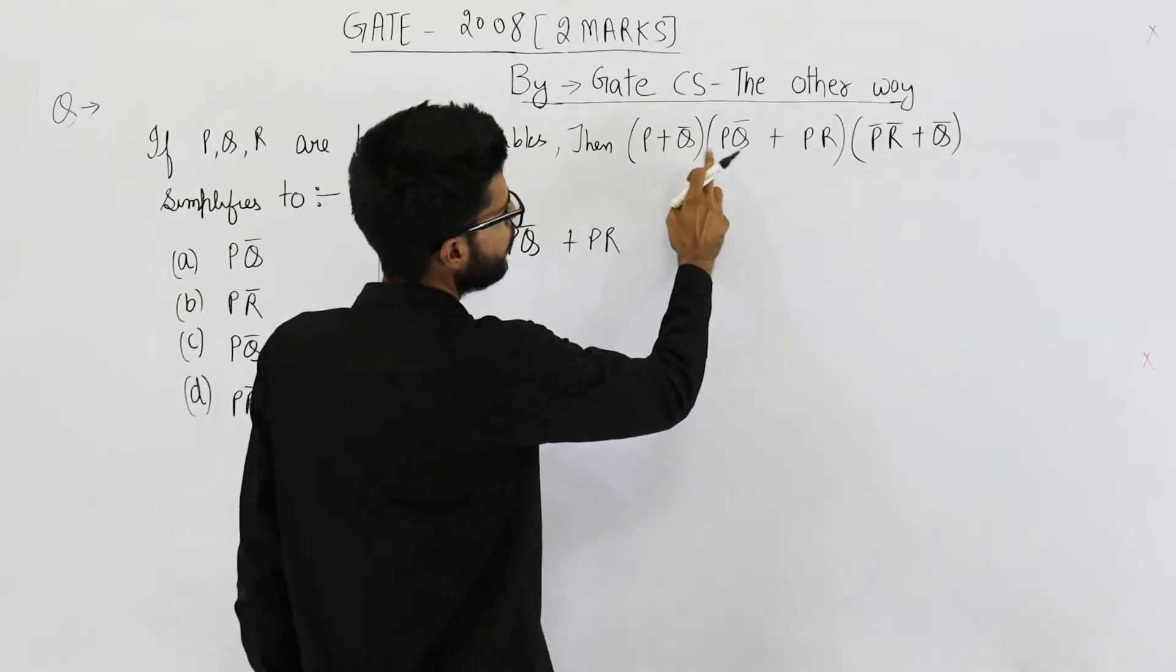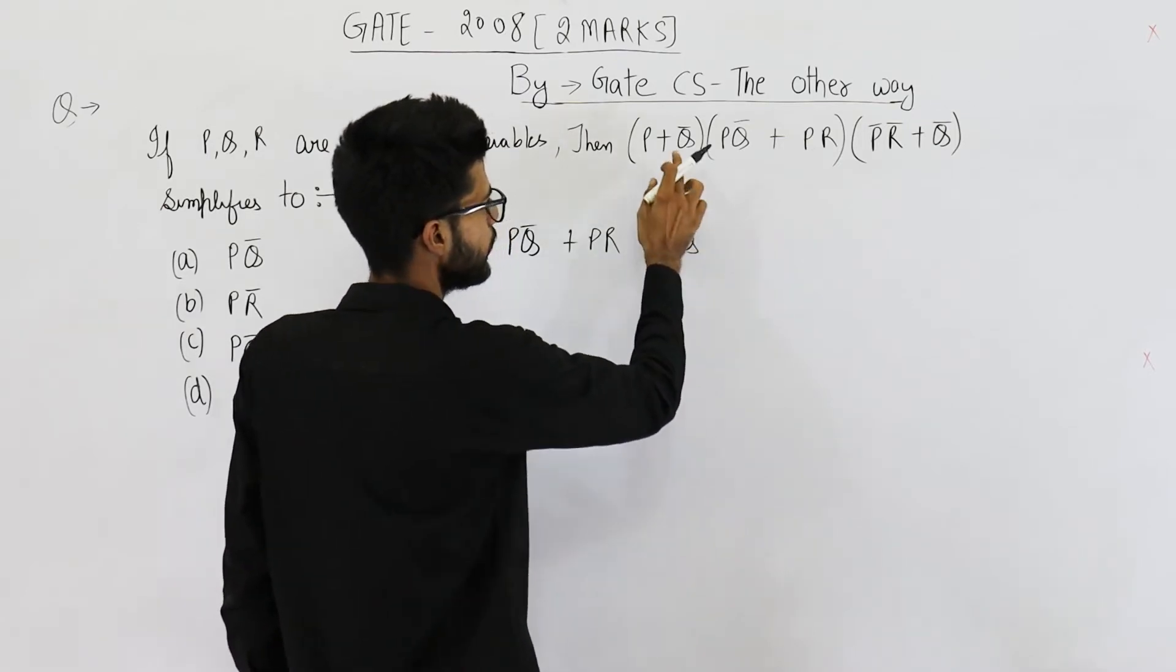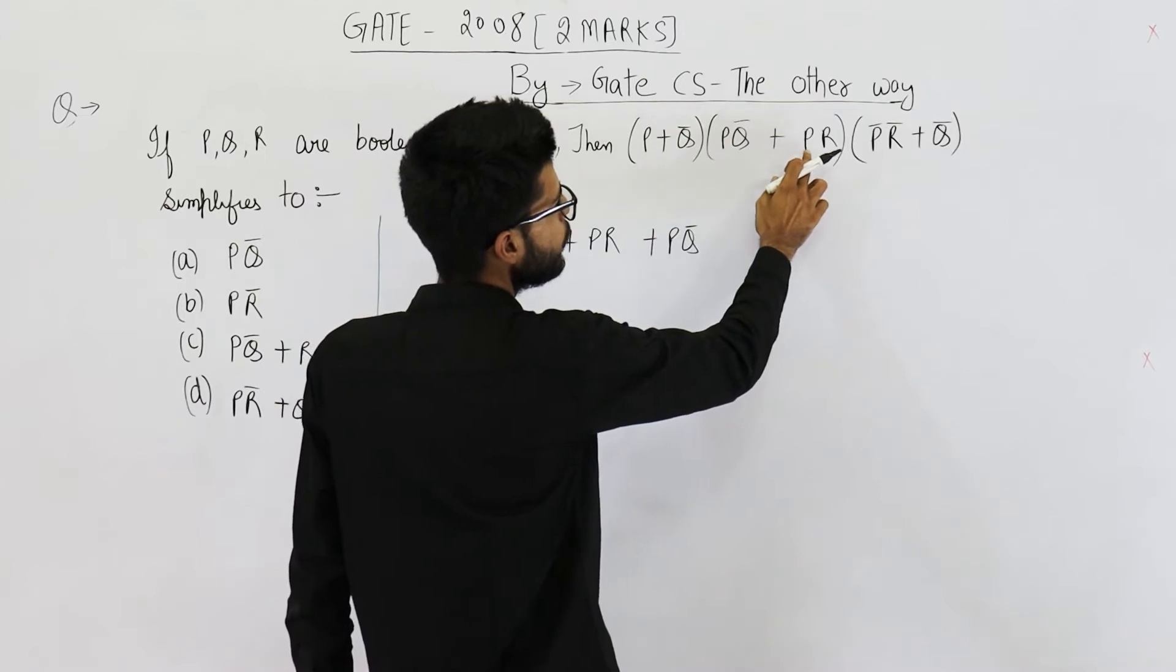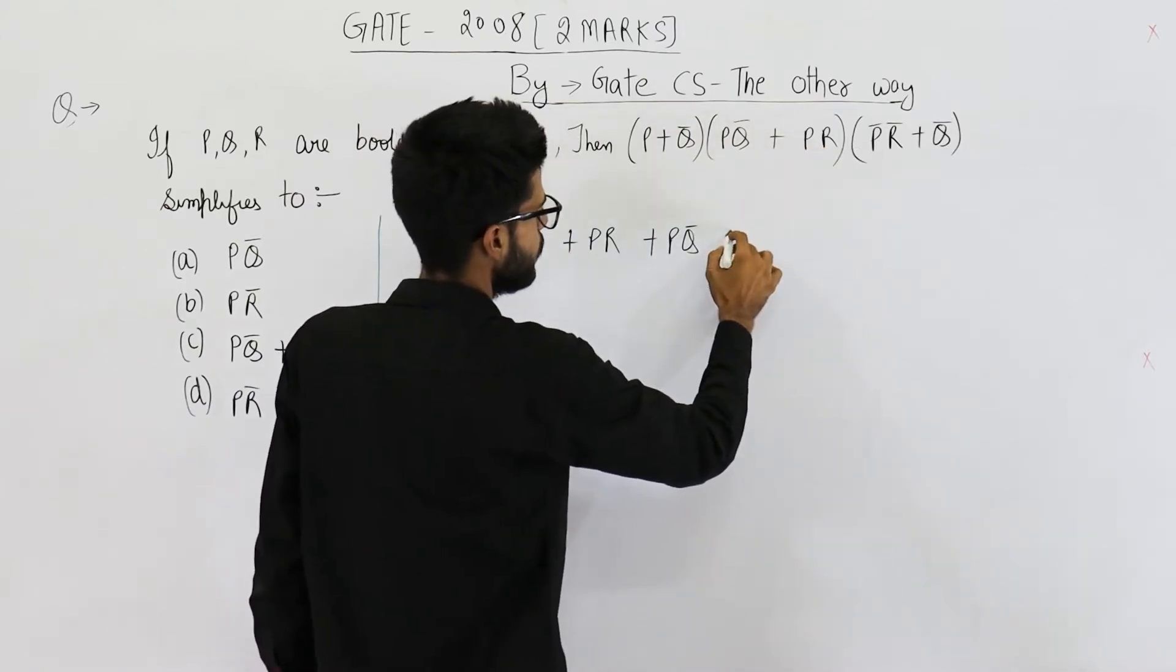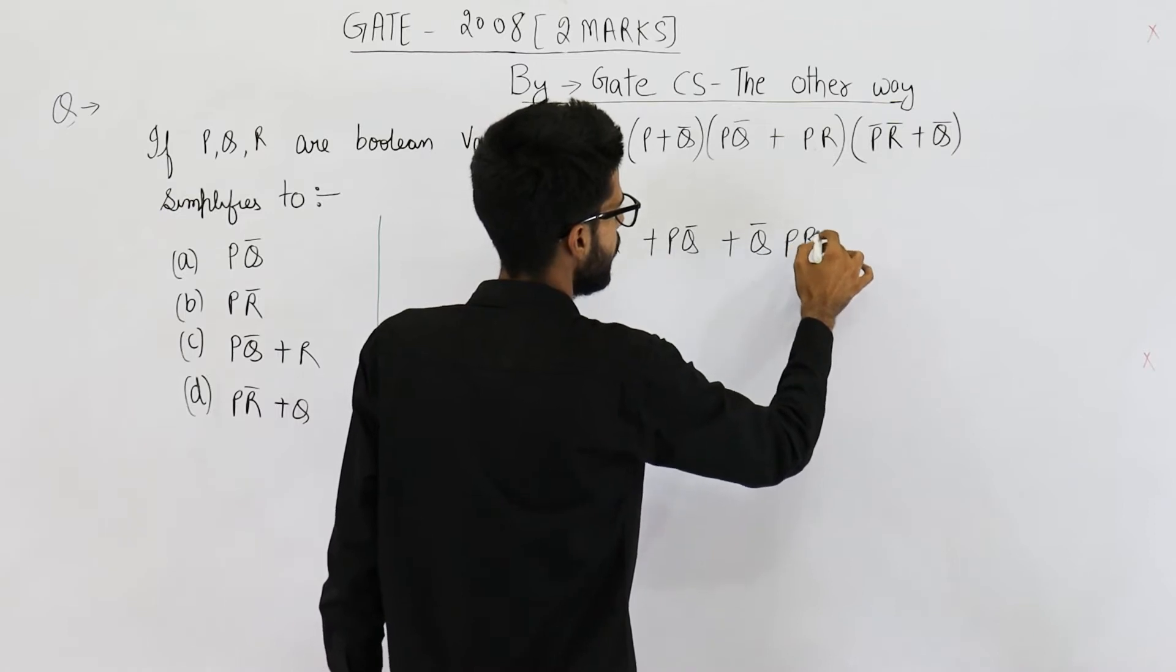Then you have Q̄ into PQ̄, that is again PQ̄. Then Q̄ into PR, that will be Q̄PR.